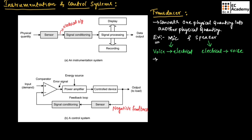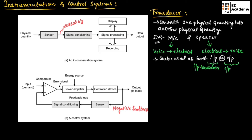A transducer can be used as both input or output for an electrical circuit. If we use a transducer at the input, we call it an input transducer. If we use the transducer at the output, we call it an output transducer. Since we use the mic at the input, we can call mic an input transducer. Since we use the speaker at the output, we can call speaker an output transducer.